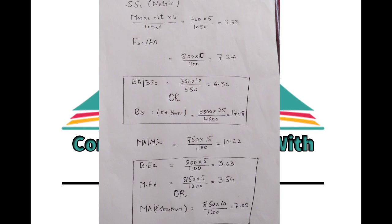اب میں آپ کے سامنے ایک example show کرتا ہوں جس سے marks distribution بالکل clear ہو جائے گی۔ اگر کسی نے metric میں 700 marks لیے تو 700 کو 5 سے multiply کرے گا اور 1050 پر divide کرے گا تو 3.33 آئے گا۔ اگر F.A/F.Sc میں 800 marks لیے تو 800 کو 10 سے multiply کرے گا اور 1100 پر divide کرے گا تو 7.2 بنے گا۔ اگر B.A/B.Sc کیا ہوا ہے تو 350 marks کو 10 سے multiply کرے گا اور total 550 پر divide کرے گا جو 6.36 ہے۔